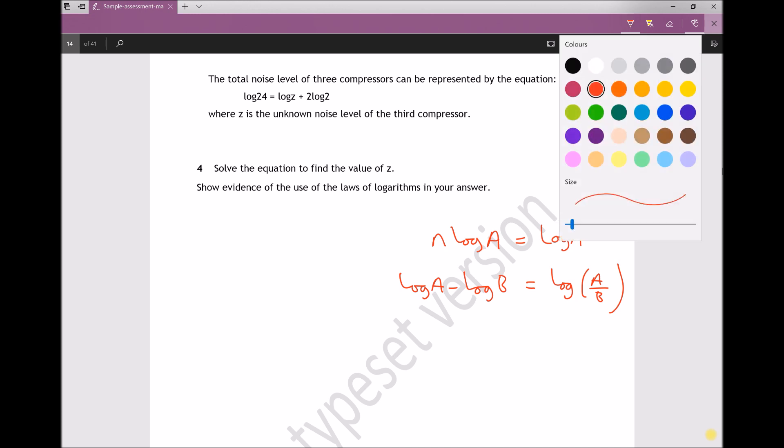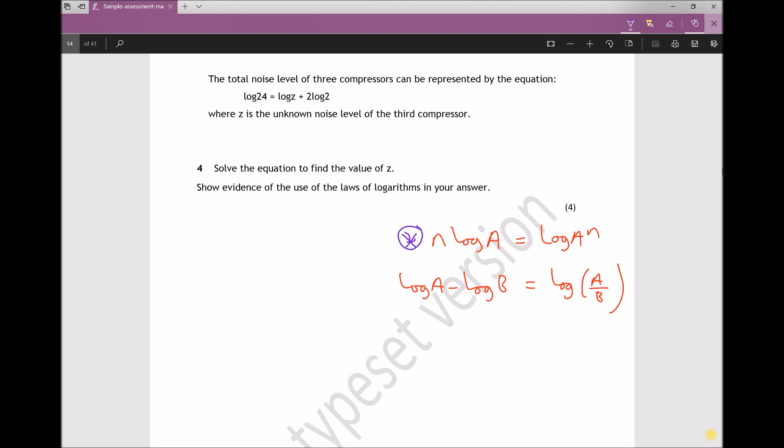Let's move on to our solution. The first thing I'm going to do is use the first log law to modify this term. Let's write out what we have. We have log24 = logZ + 2log2, but 2log2 is the same as log(2²). We know that from the first log law.